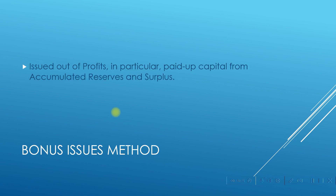Finally, the bonus issue method: bonus shares are issued out of profit, specifically paid-up capital from accumulated reserves and surplus. Whenever there is accumulated reserves and surplus of profits, that is converted into paid-up capital — that is how bonus issues are done. It merely means capitalization of reserves and surplus of a company. This completes the marketing of public issues and this completes the session on public issue management.